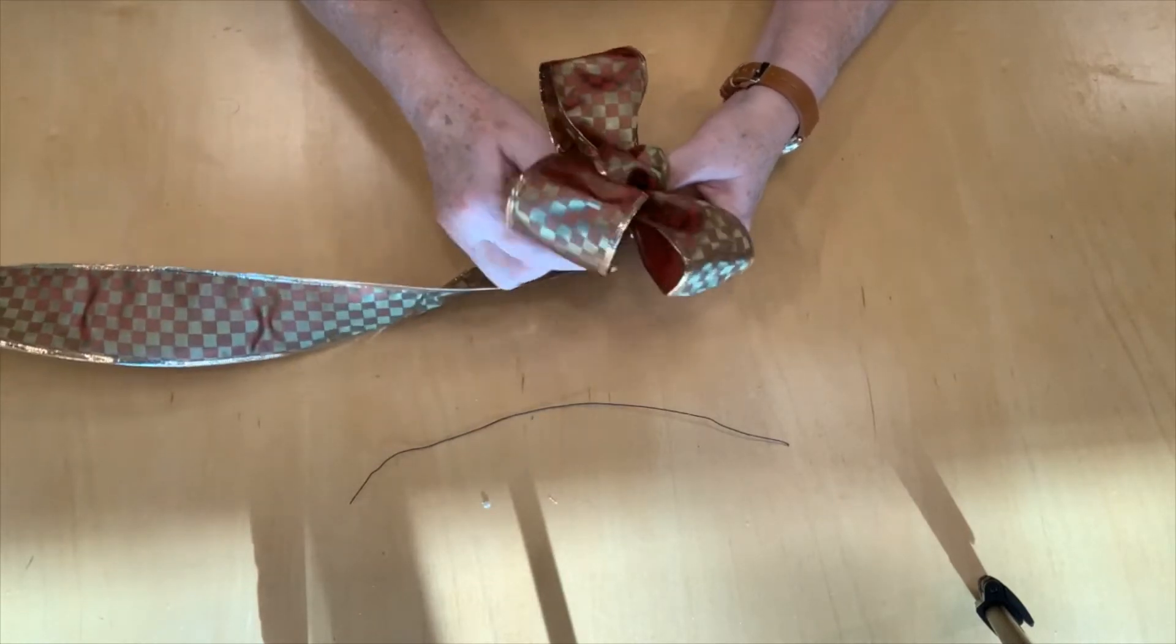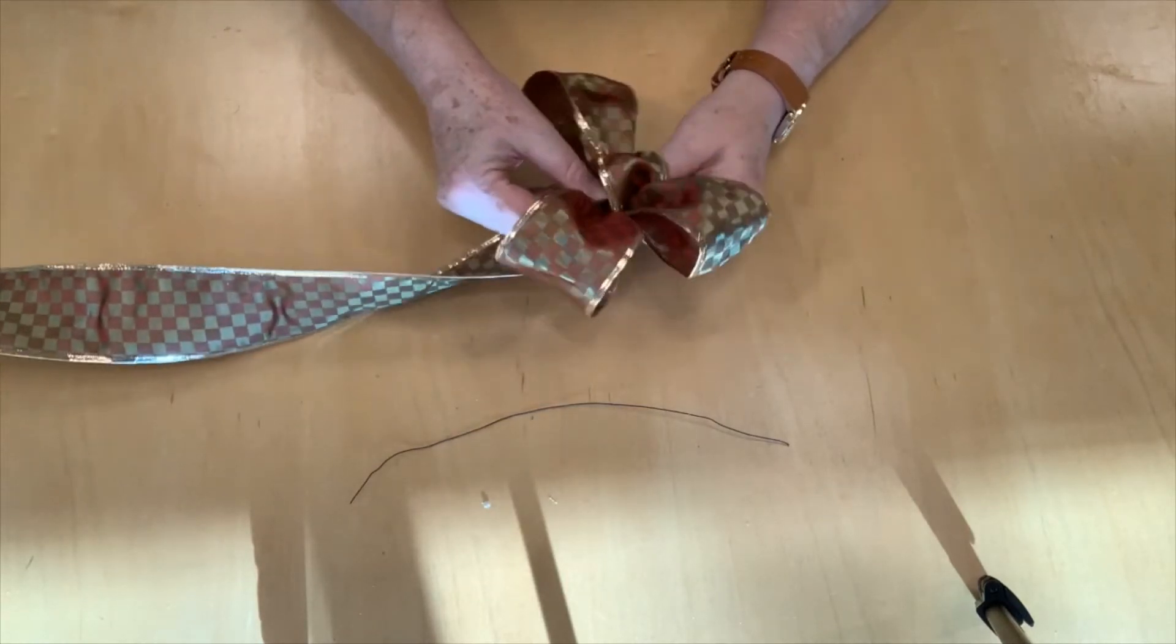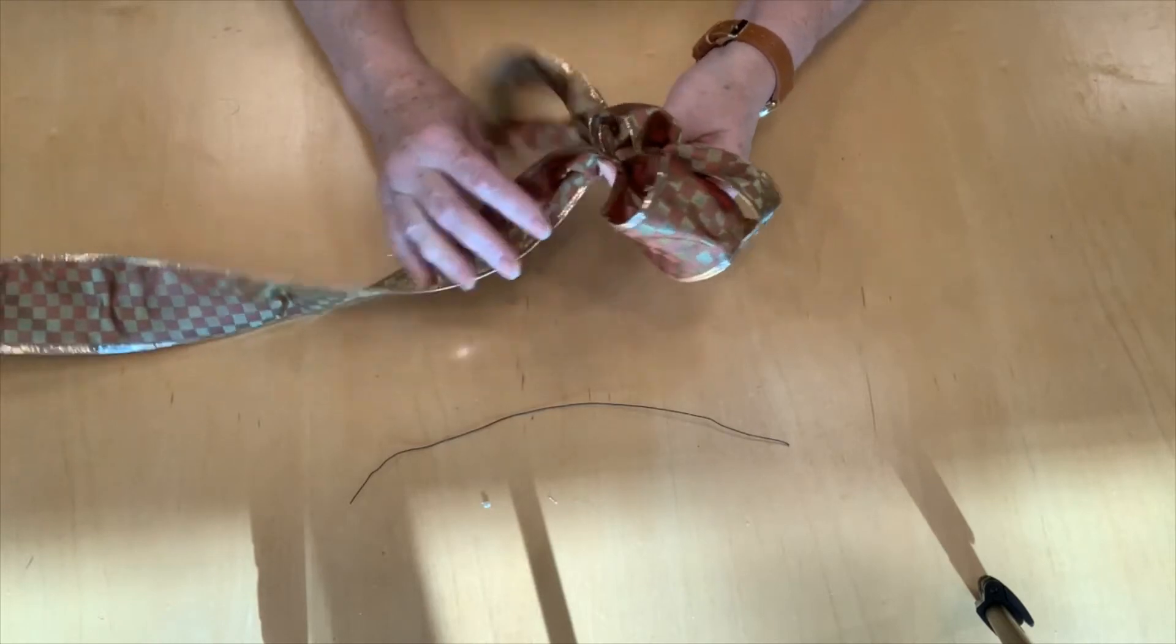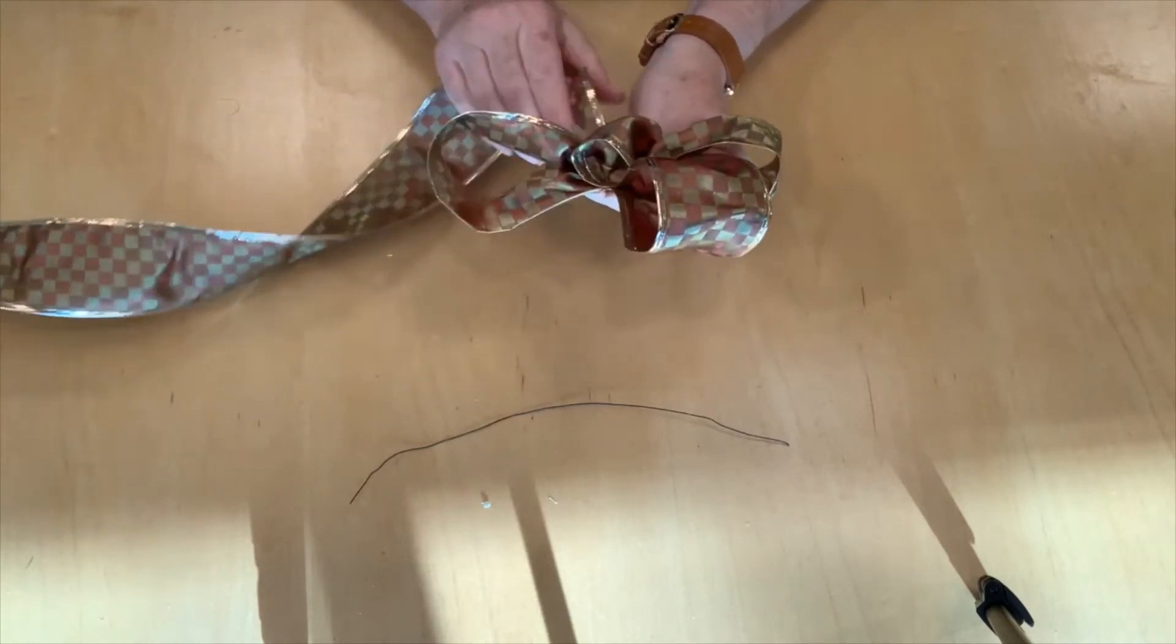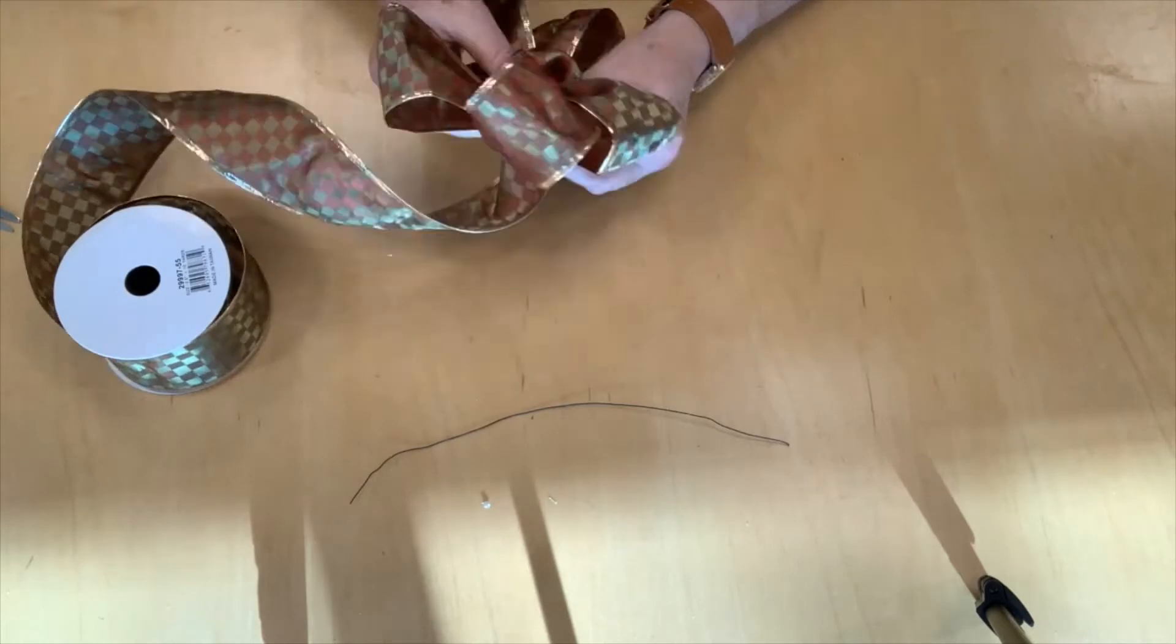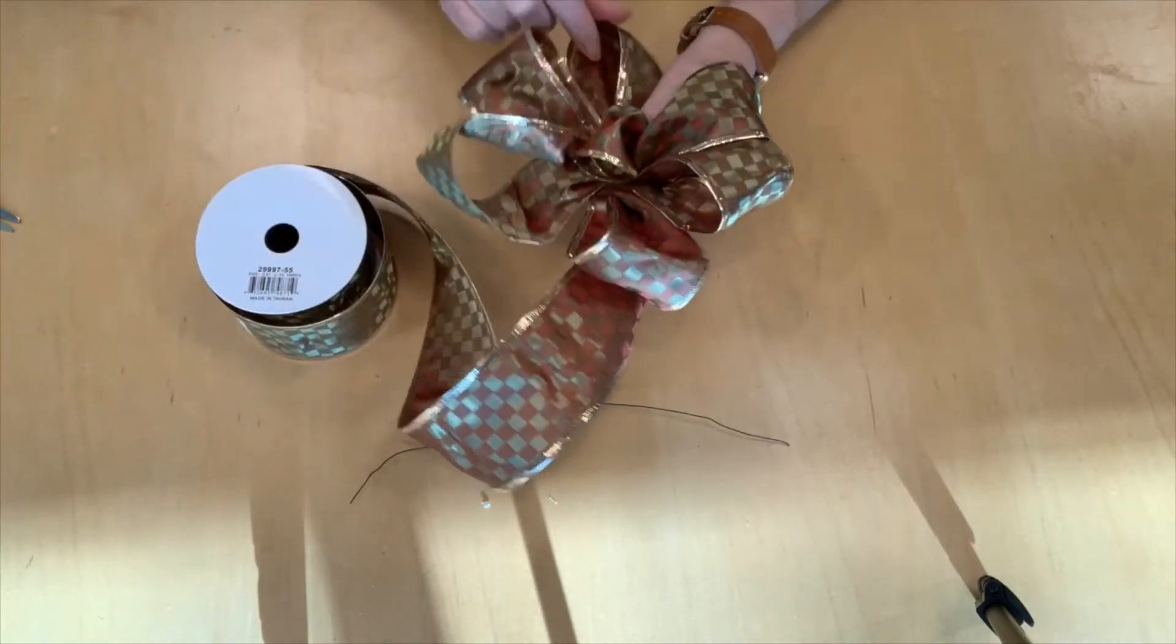The other thing I'm doing is I'm pulling it off a little bit to the side to start making that nice circular look to my bow.